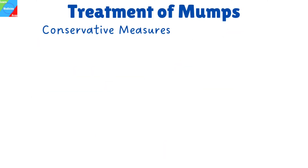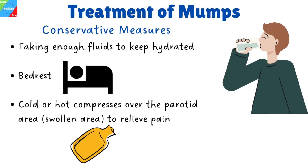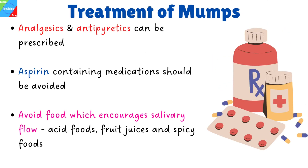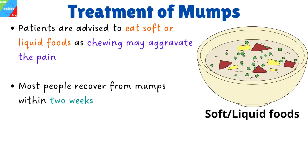The treatment of mumps is nonspecific. Conservative measures include taking enough fluids to keep hydrated, bed rest, and cold or hot compresses over the parotid area to relieve pain. Analgesics and antipyretics can be prescribed; however, aspirin-containing medications should be avoided. Foods which encourage salivary flow should be avoided as they cause pain — these include acidic foods, fruit juices, and spicy foods. Patients are advised to eat soft or liquid foods as chewing may aggravate the pain.